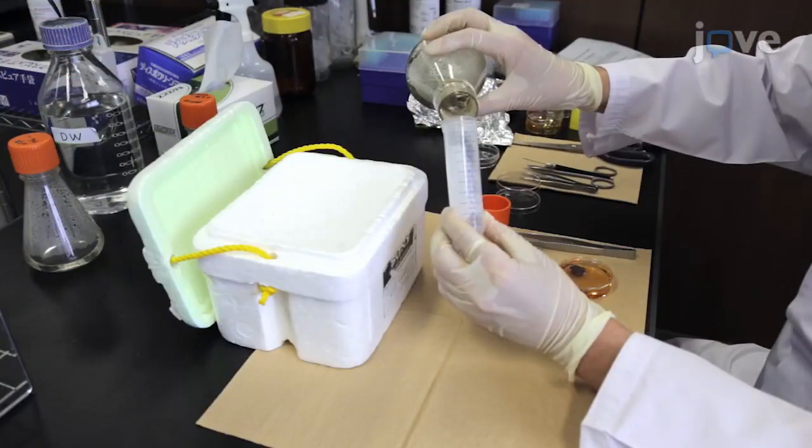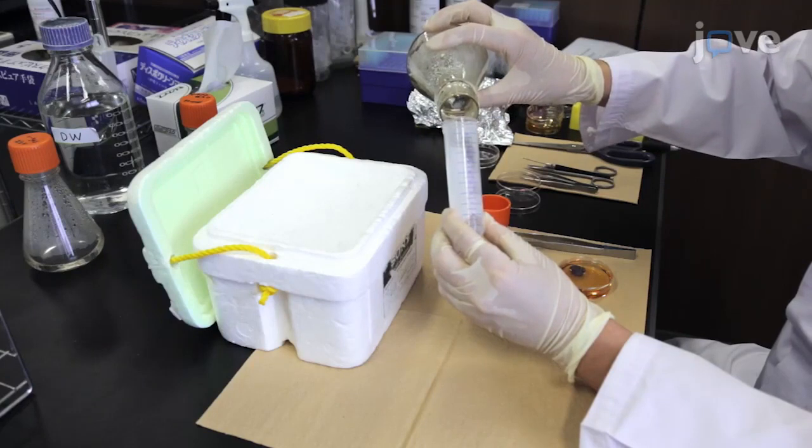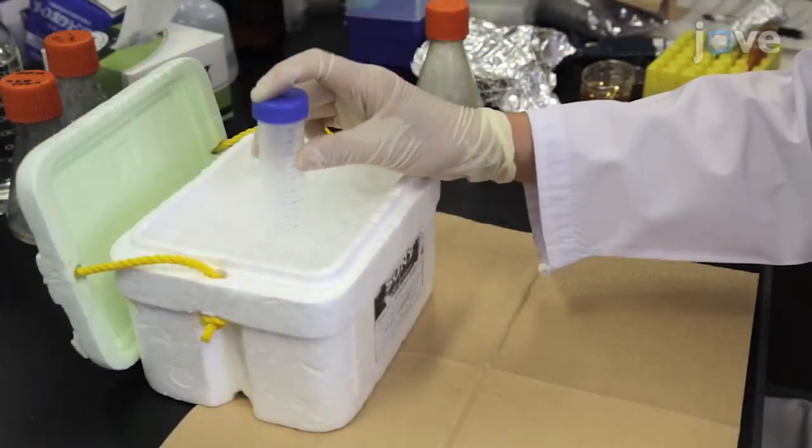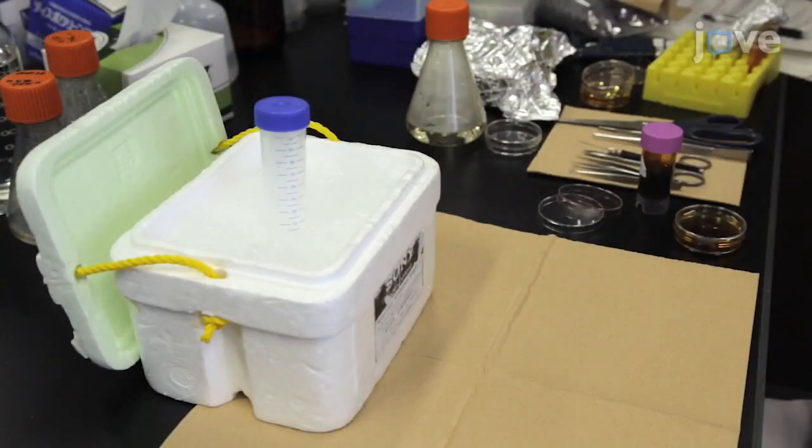Then add 20 ml of 0.5% agarose to the tube. Place on ice until the agarose begins to harden.